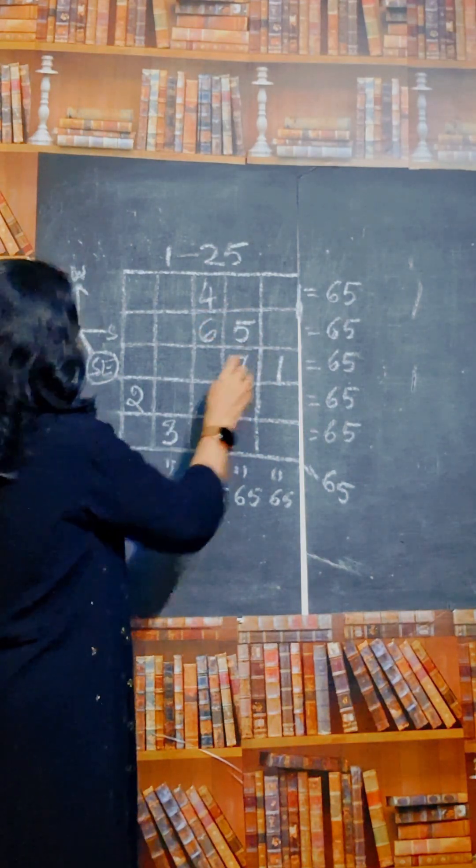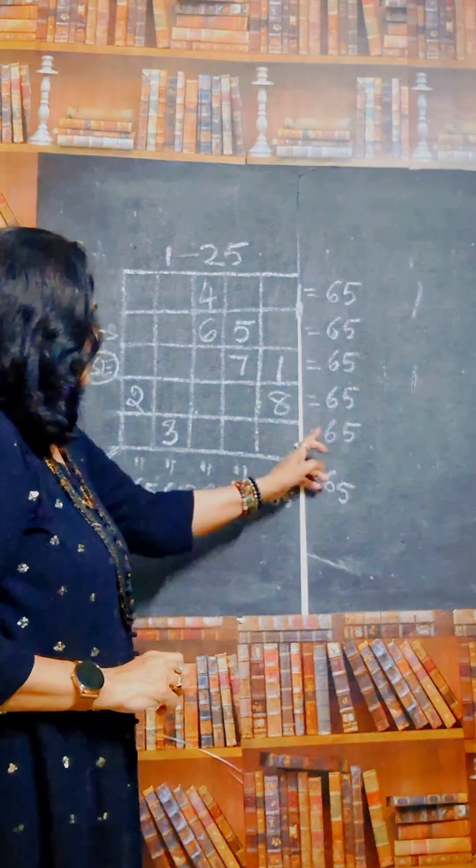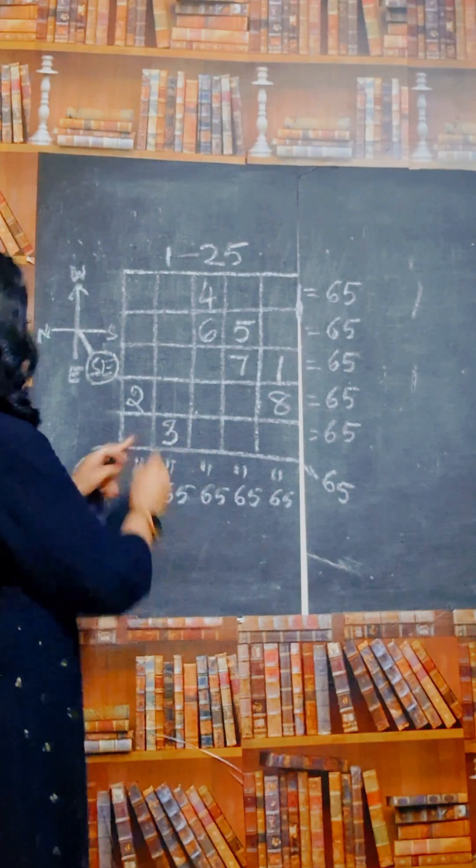Then again here 7, then here 8, then go to the south east but there is no box. Come to the last one here, this is 9.